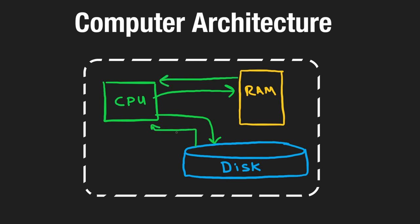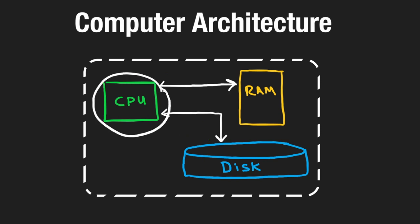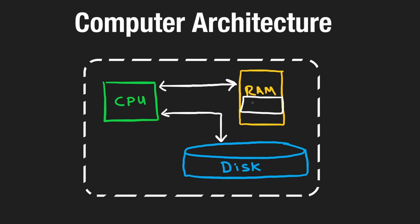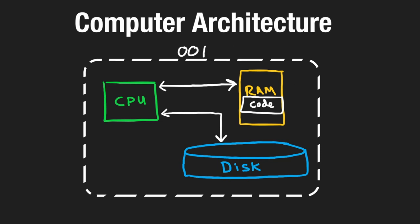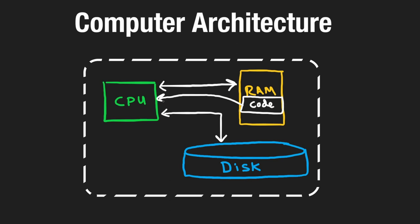The CPU can read from RAM and from disk. What does it do with that data? The CPU executes code. We can assume that the code we wrote is stored somewhere in memory. Of course, English-character code gets compiled down into instructions the CPU can interpret — everything ultimately represented as zeros and ones.